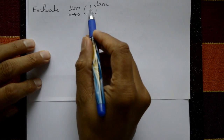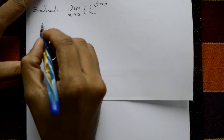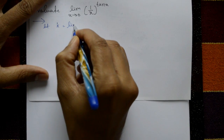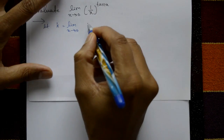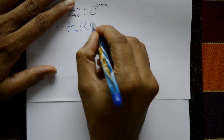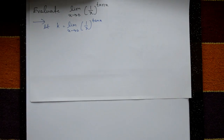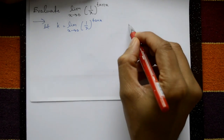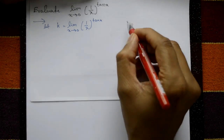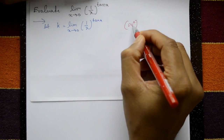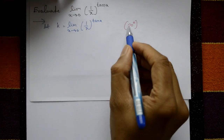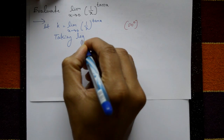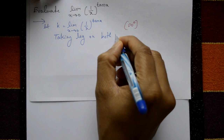Evaluate the limit as x tends to 0 of (1/x) raised to tan x. Let k equal this limit. Applying x equals 0: 1 by 0 is infinity and tan 0 is 0, giving the form infinity raised to 0. Since it is infinity raised to 0, take log on both sides.